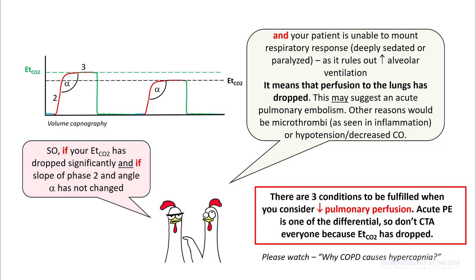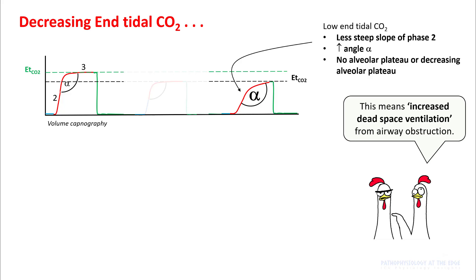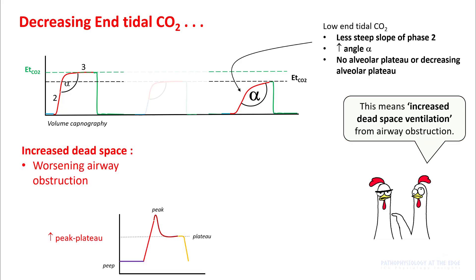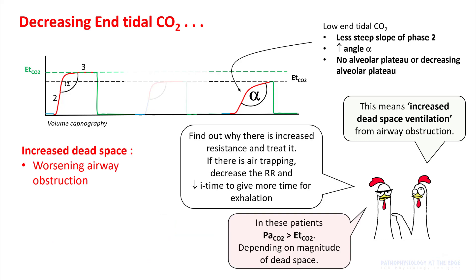Understand that this represents decreased pulmonary perfusion, and acute PE is just one of the causes. So don't go performing CT angiogram on everyone because your end-tidal has dropped. If you see a new capnogram with less steep slope of phase 2, increased angle alpha, and decreasing alveolar plateau, that would mean the patient is having increased dead space ventilation from airway obstruction. You can also look at your peak minus plateau pressures, where the difference will be increased, suggesting increased resistance in the circuit. In these cases, your PaCO2 will be more than end-tidal CO2.